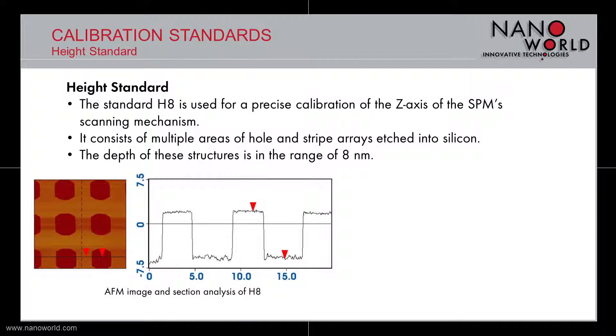On bottom left you can observe an AFM image of one pattern of the H8 calibration standard and on the right a corresponding section analysis. The measured vertical distance is 8.08 nm, which is very close to the expected 8 nm.